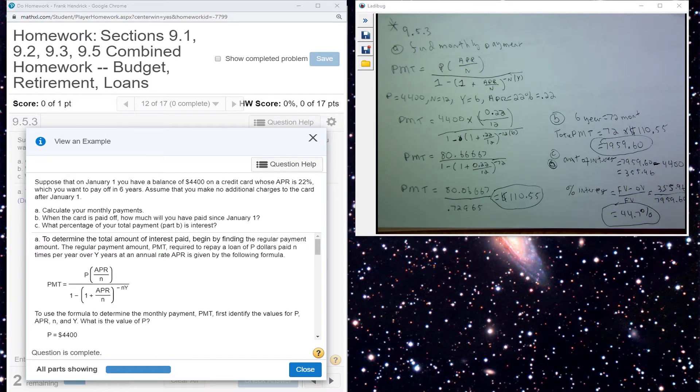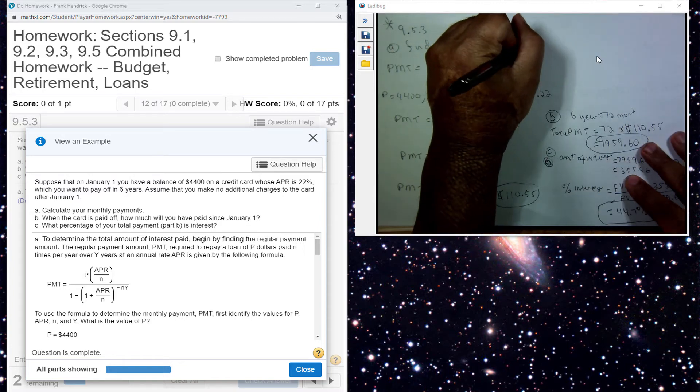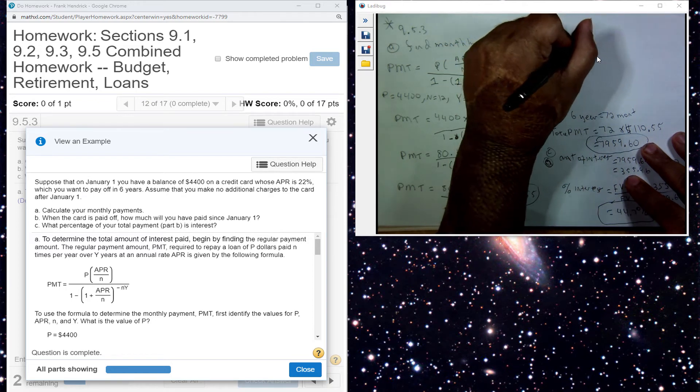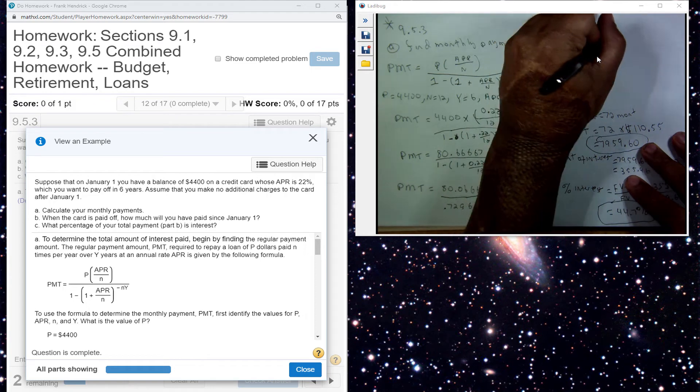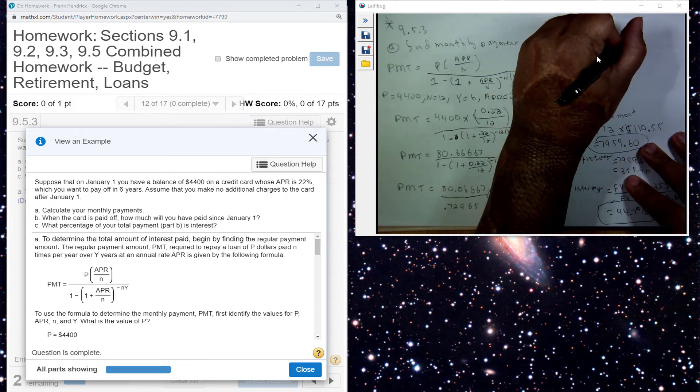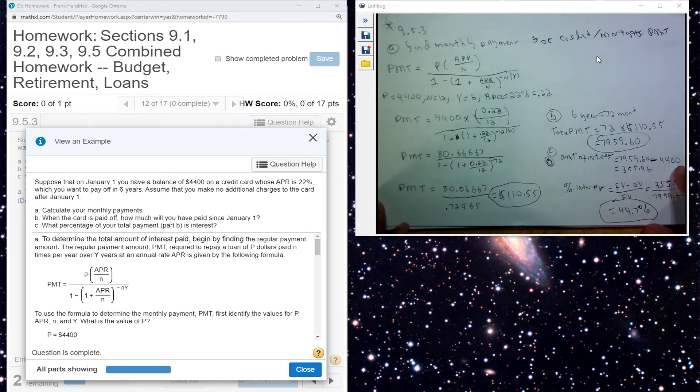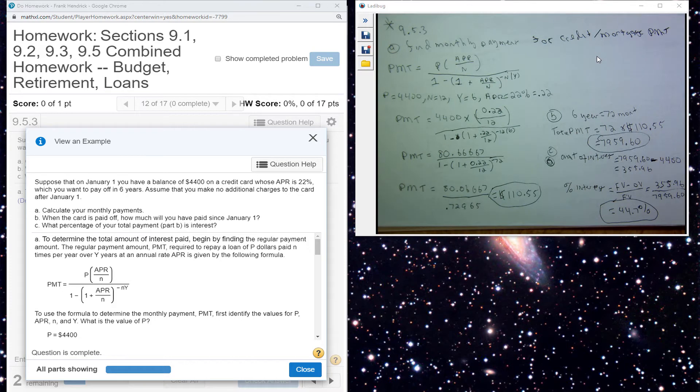This particular formula here is a formula that's used for credit card loans and mortgage loans. This is for credit and mortgage payments, they're using that formula there, just to tell them the amount of payments they have to make.